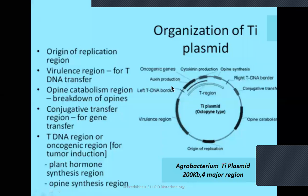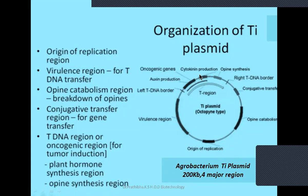The four major regions of the Ti plasmid are: the origin of replication, the virulence region for T-DNA transfer, the opine catabolism region for breakdown of opines, the conjugative transfer region for gene transfer, and the T-DNA region — the oncogenic region — for tumor induction, which also contains the plant hormone synthesizing region and opine synthesis, flanked by the left border and right border.